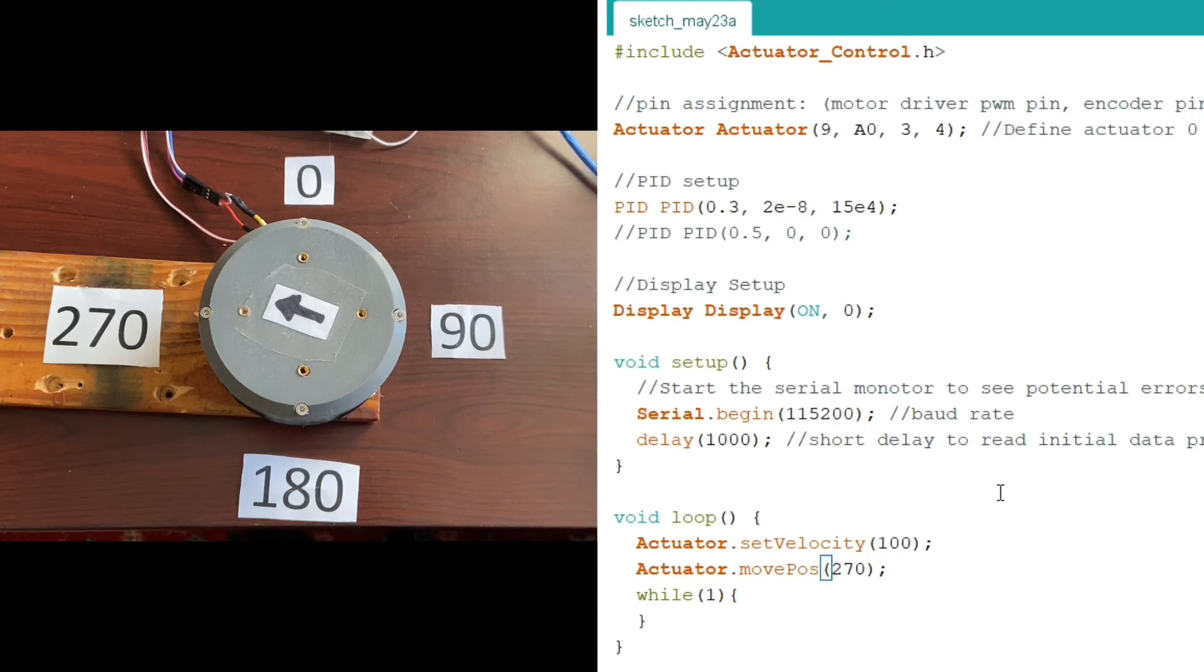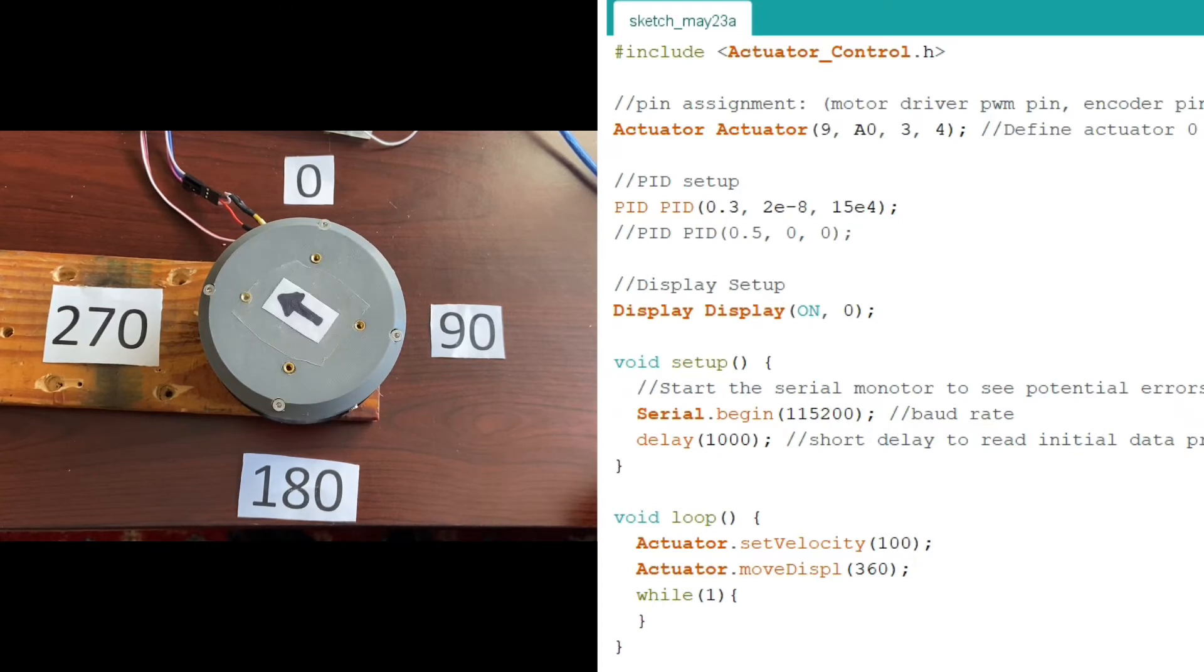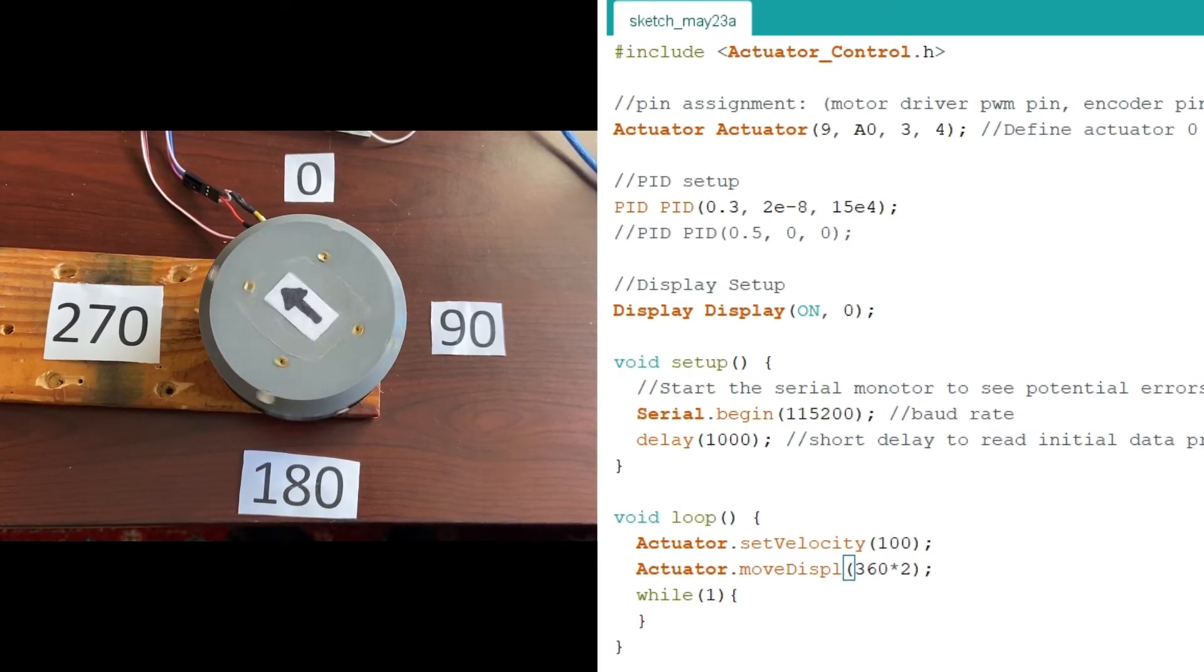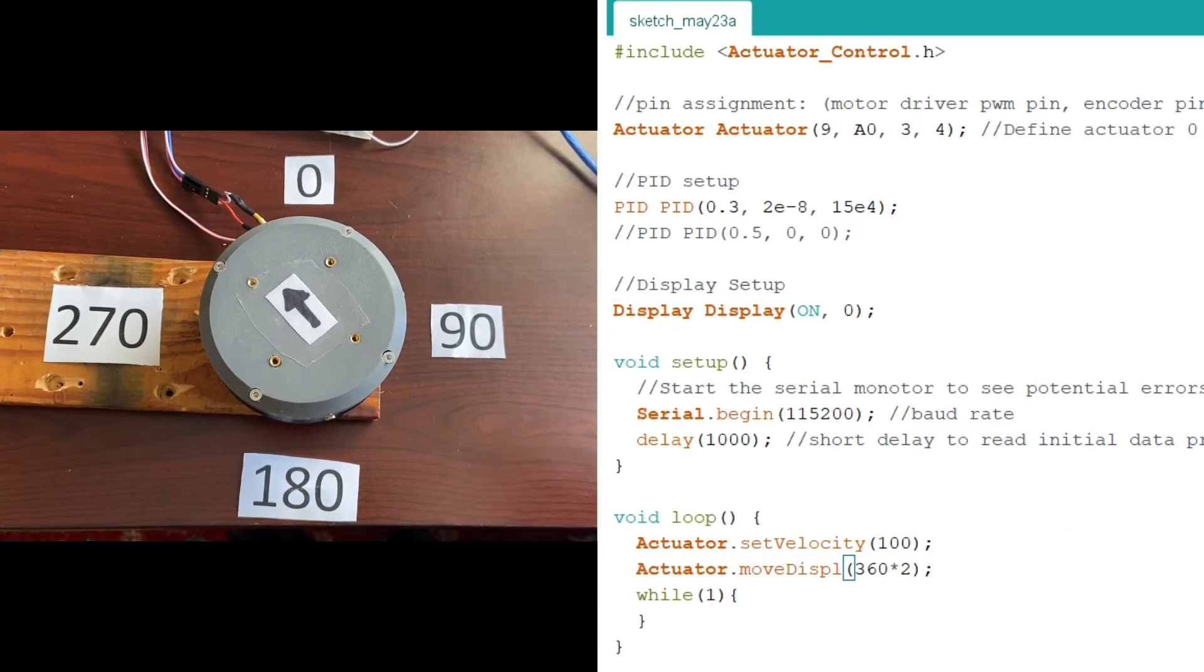Another thing I should also show is that you can move it for a certain displacement. So right now I'm moving it to a certain position, but let's say I wanted to move it like a couple rotations. So let's say I wanted to move it 360 degrees, so one rotation. I could do that as well with my library. So now it should rotate once and come back to its exact position. So about its exact position. You can do more than one rotation as well, as many as you want. So if I do 360 times two, it should revolute two times. And again, it's still kind of changing, losing some of its accuracy there.